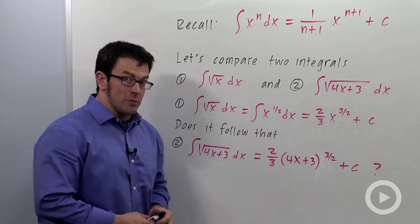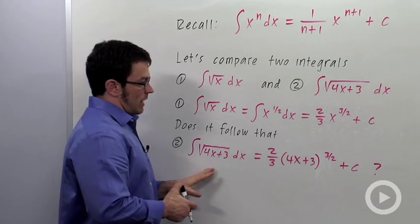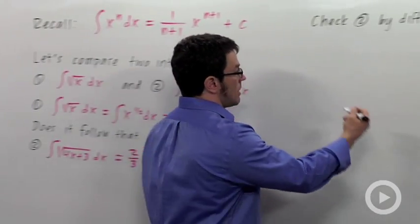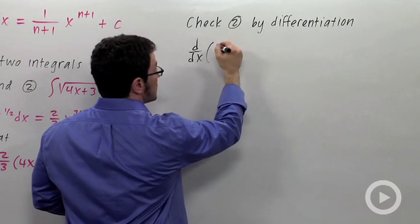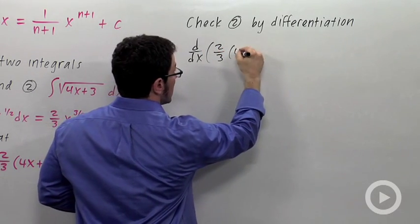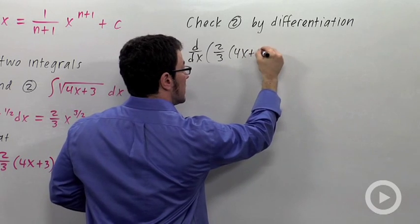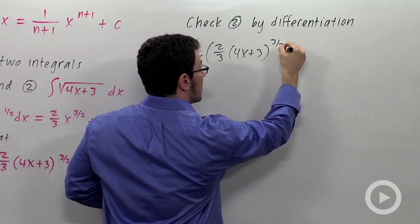Now, I want to check this answer by differentiation to see if it's correct. So let me take this answer and differentiate it. And I have 2 thirds, 4x plus 3 to the 3 halves plus c.